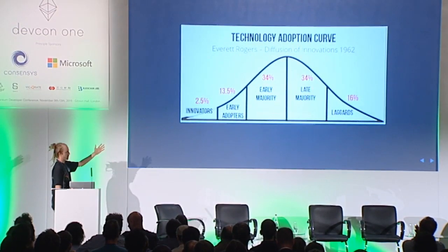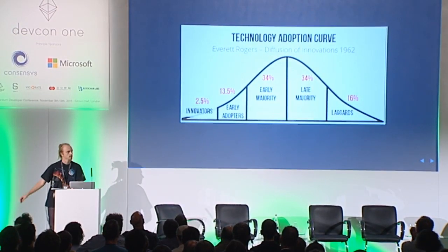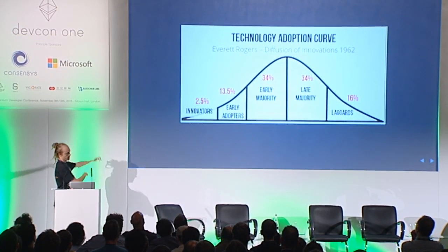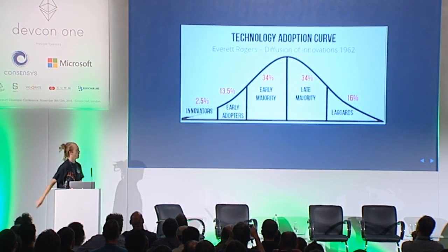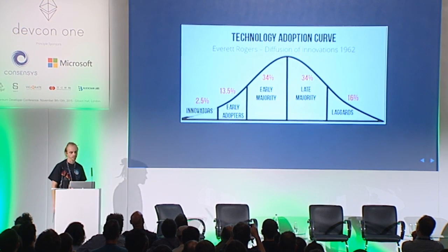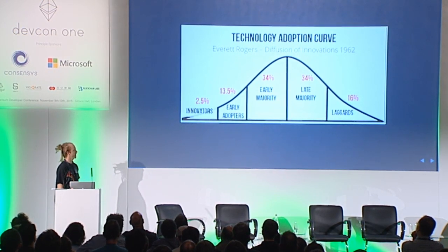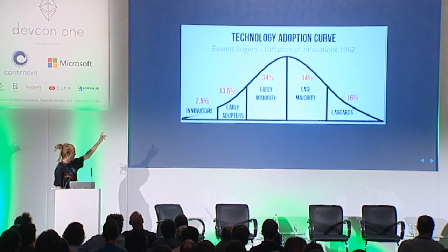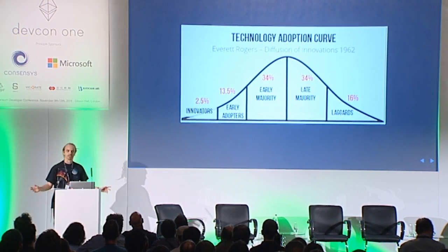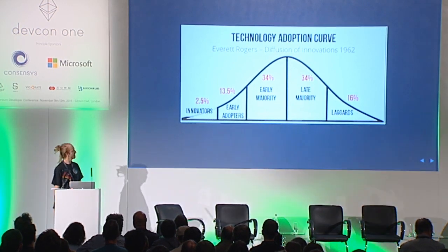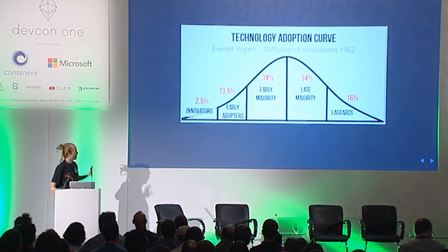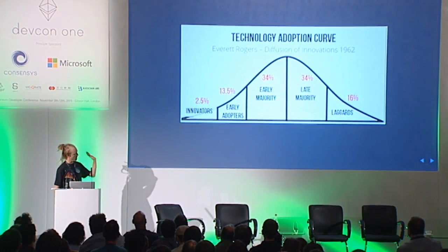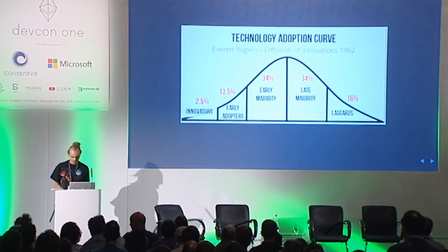I'm sure we've all seen this before. This is MetaMask's challenge: adoption. How do we improve adoption of Ethereum? We're at the very tip of the innovators. You're lucky to have found yourself here, but how do we push further down into the curve?